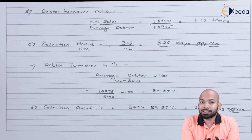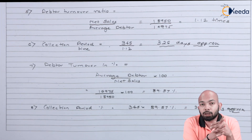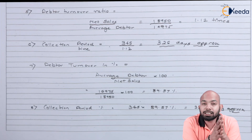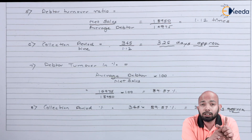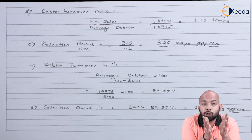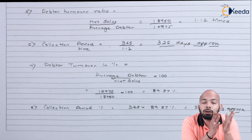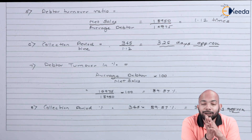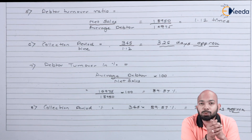So the calculation comes to the same number of days — 326 days approximately. This is how you calculate debtor velocity: it involves calculating the debtor turnover ratio and the collection period, both in percentage or in times. If nothing is mentioned in the question, you can calculate both. I hope this video gave you clarity on the concept of debtor velocity in ratio analysis. Thank you for watching — stay tuned with Ikeda and keep subscribing.